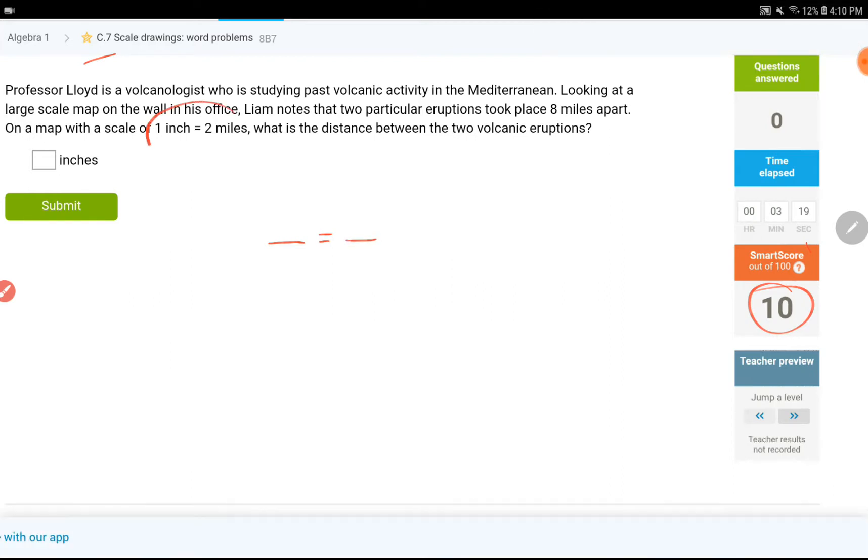So, what I know is 1 inch equals 2 miles. 1 inch equals 2 miles. My answer is the unknown is the inches, so I am going to put a variable for the inches line. For the miles, that is my number, 8 miles.